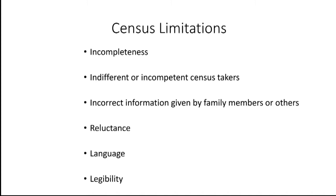Reluctance was another limitation. Some people may have intentionally avoided being counted. Depending on where an immigrant came from, it's possible they could have a fear of government officials. Language was also a limitation. Recent European immigrants may have had accents that were very difficult to understand. The census taker may have guessed at the spelling of surnames, especially Eastern and Central European names.